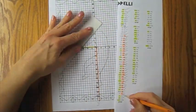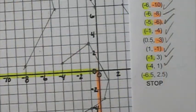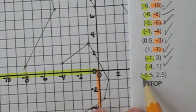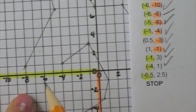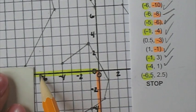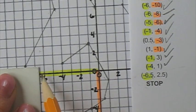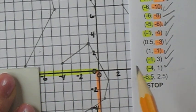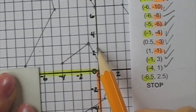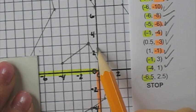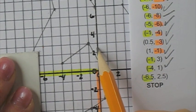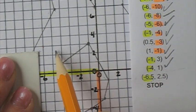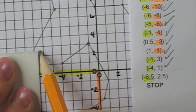Here we have an ordered pair where both values are decimals. Find the halfway mark for the x-coordinate, then the y-coordinate. Notice that the point does not end up on a line, but instead is in the center of the square.